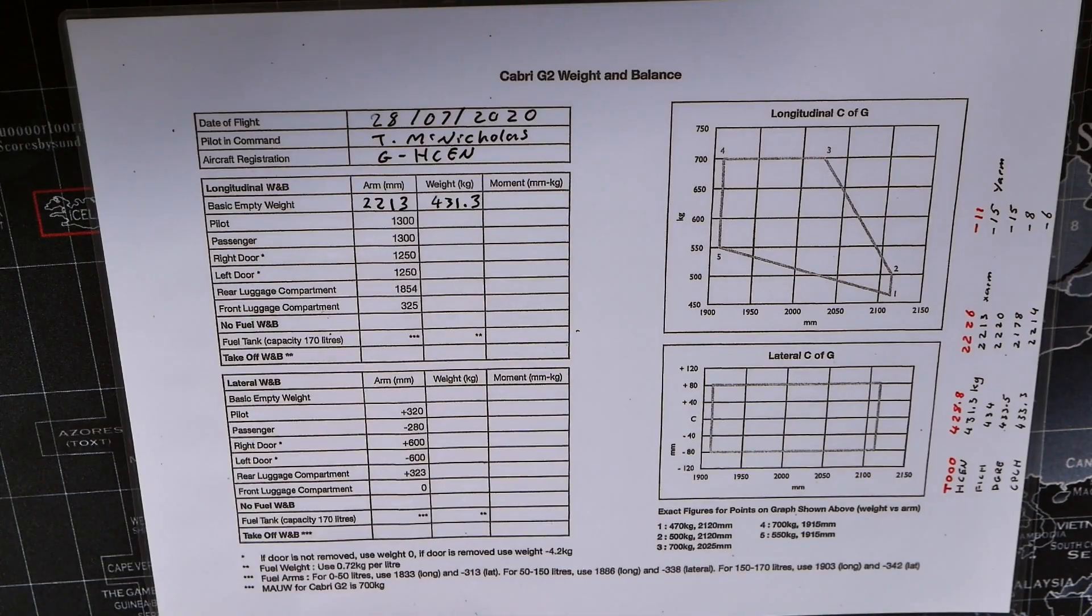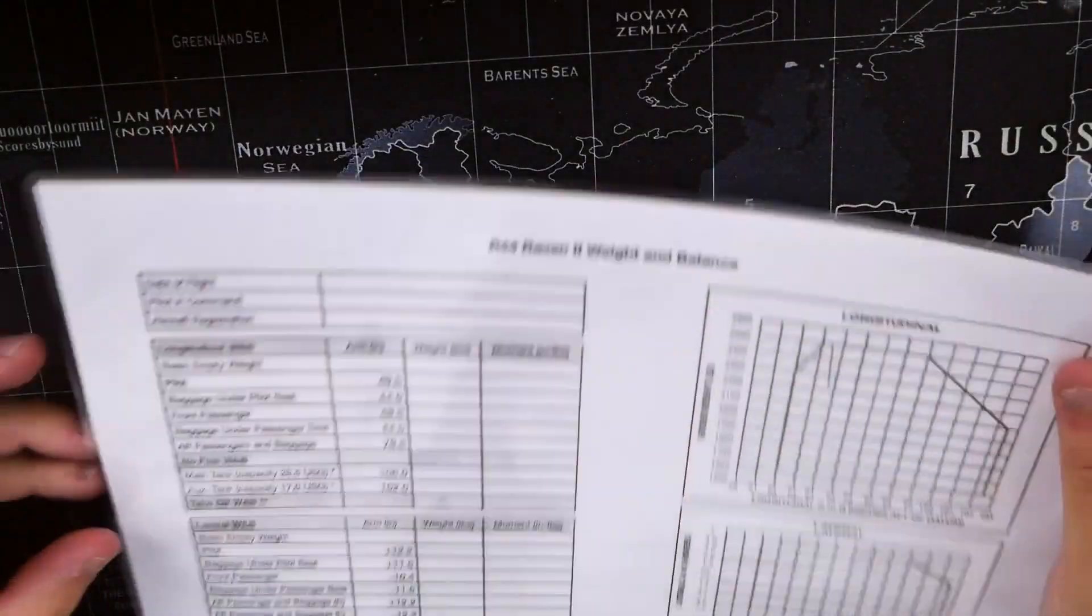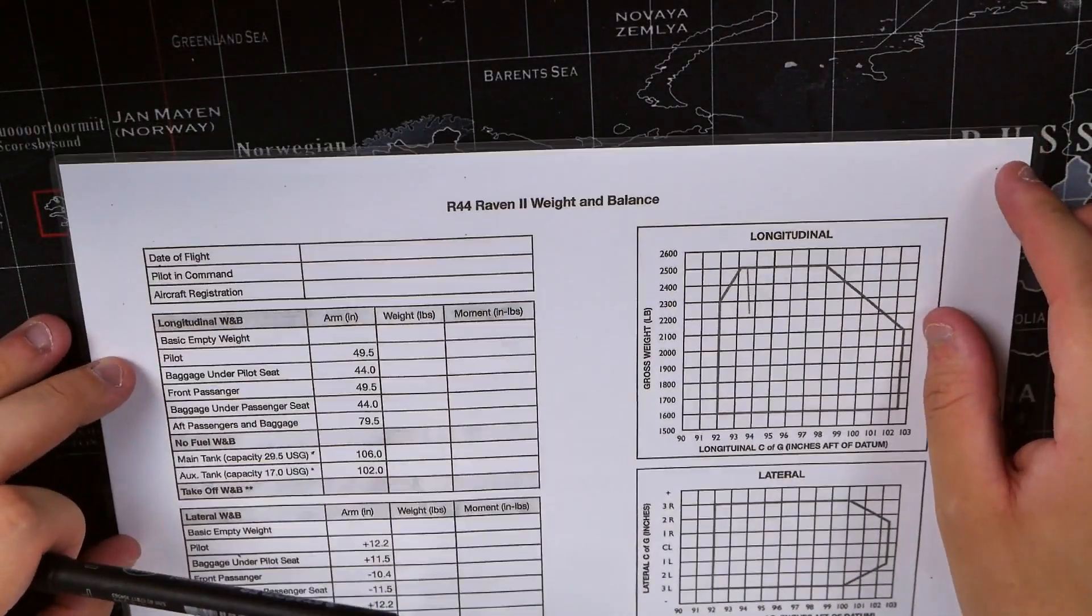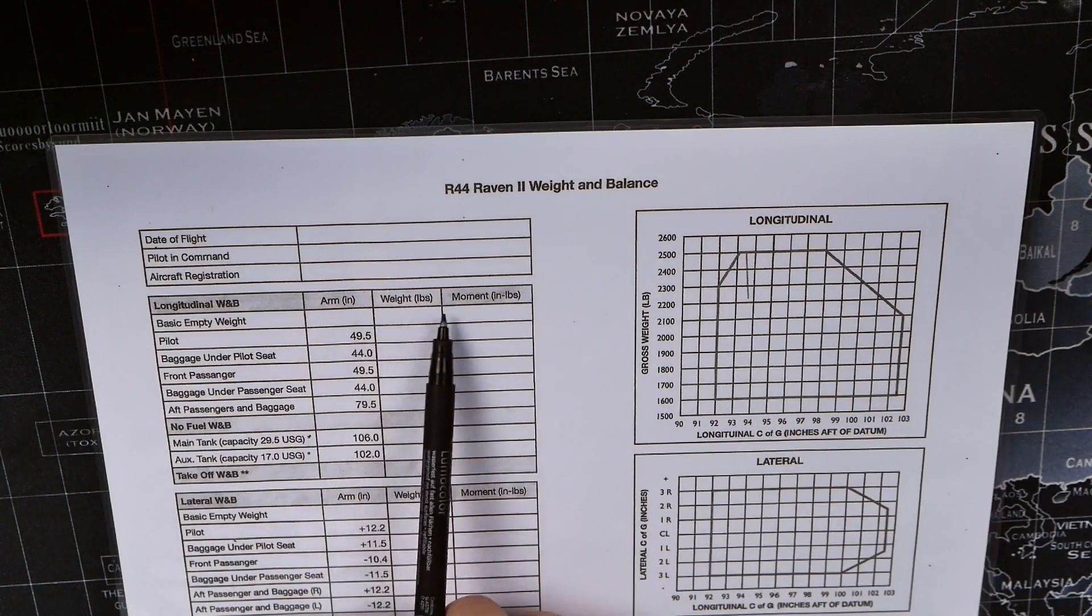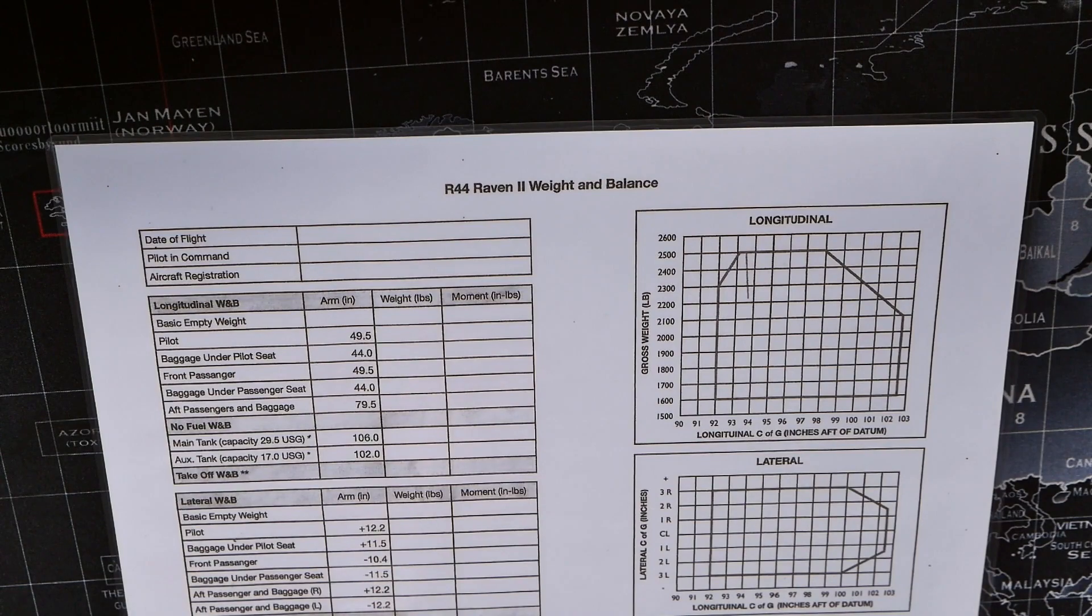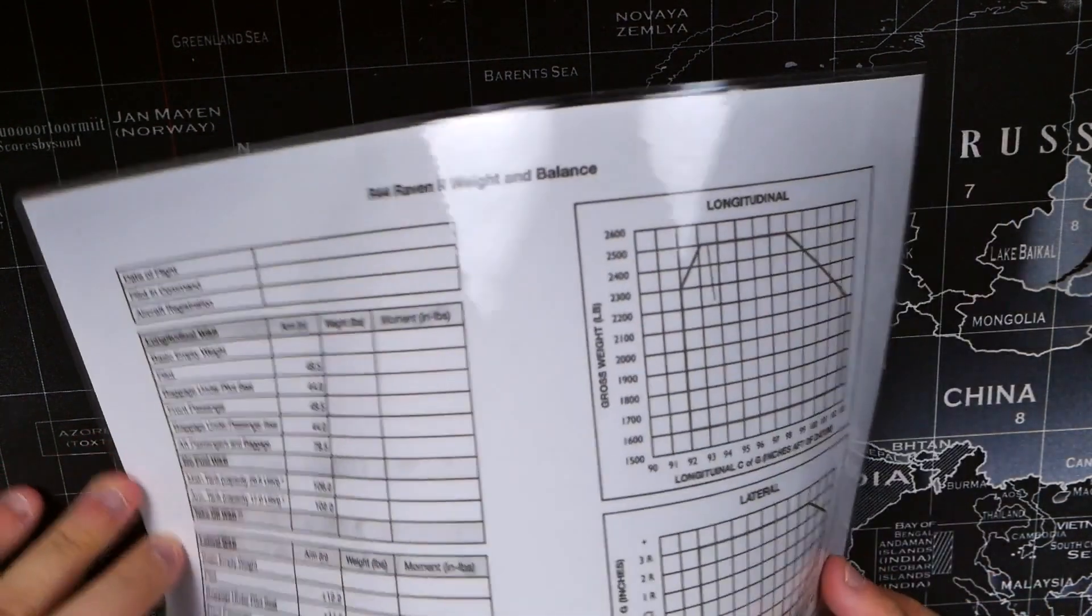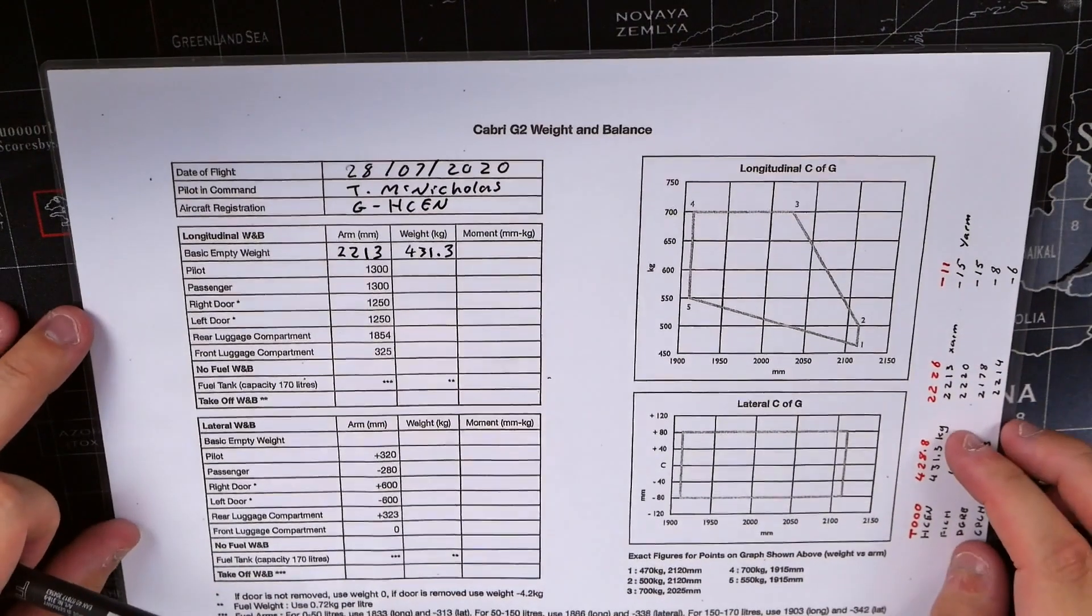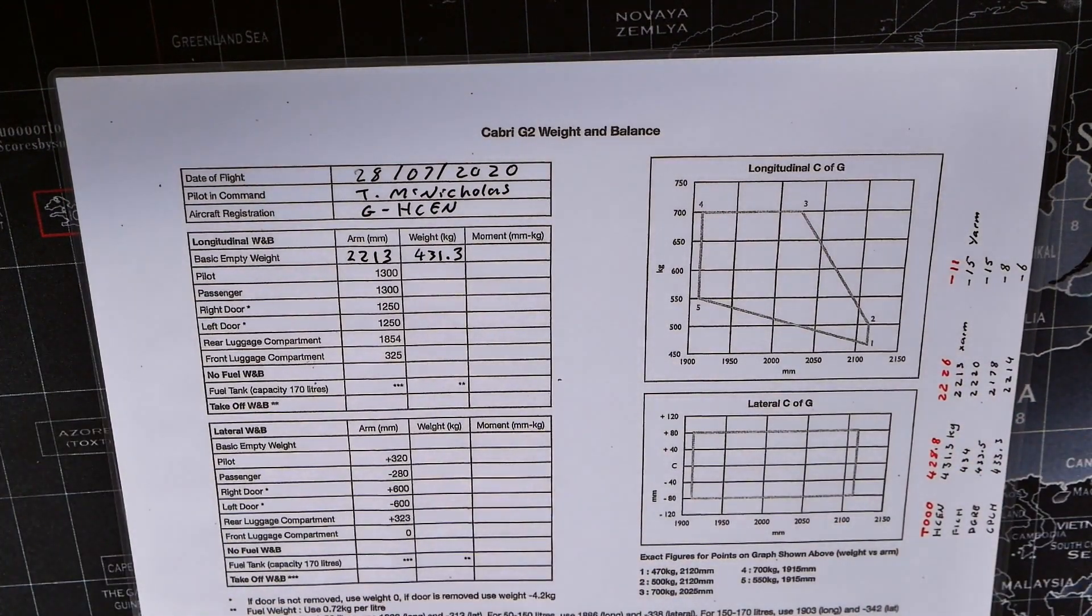As you can see, these are in millimeters and kilograms. Other mass and balance forms, like the Robinson R44, do it in inches and pounds. Always make sure you know exactly what units your weight and distances are measured in. For the Cabri G2, we're doing this in millimeters and kilograms.